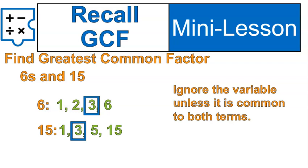First off, don't freak out about the variable. It basically doesn't impact anything unless it's in both terms, and it's not. So we are looking for the greatest common factor between those two numbers, 6 and 15.